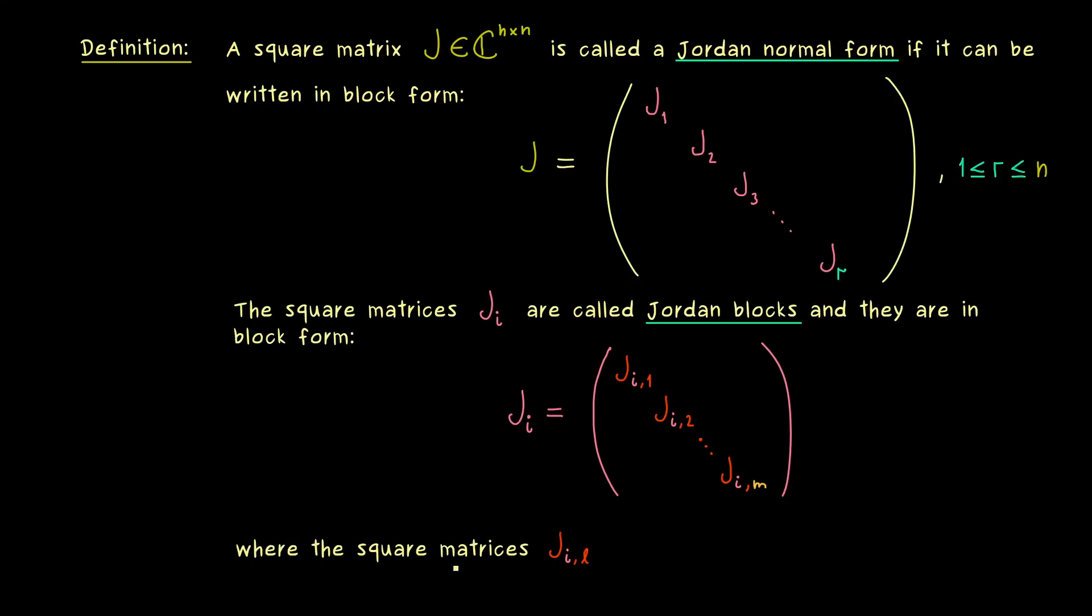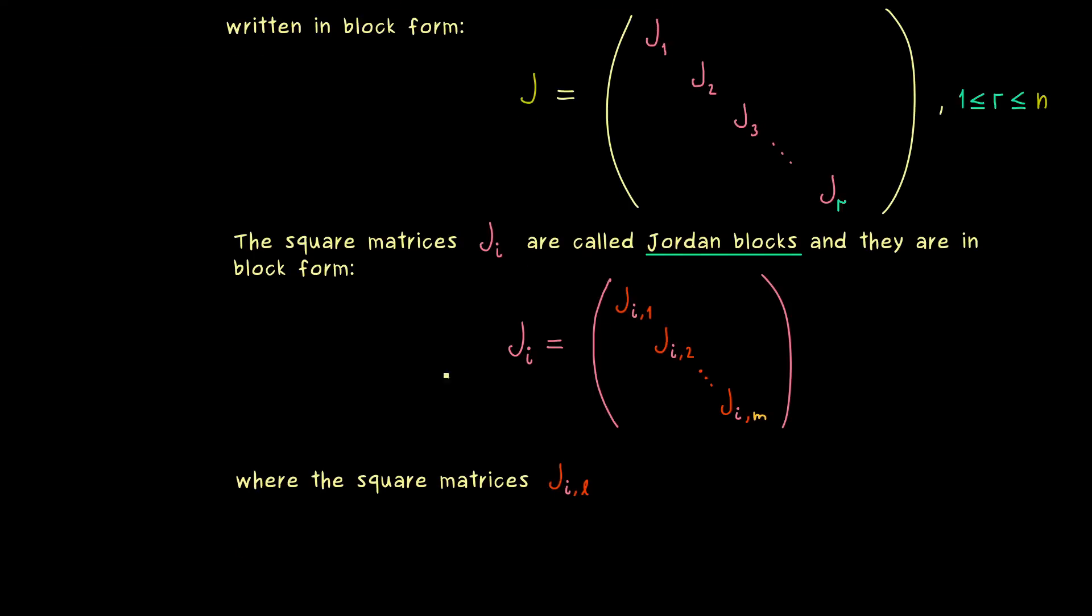So now since we have square matrices inside the Jordan blocks, we also need a name for these. And here we will call them Jordan boxes. So now you can remember, a Jordan Normal Form consists of Jordan blocks and these consist of Jordan boxes.